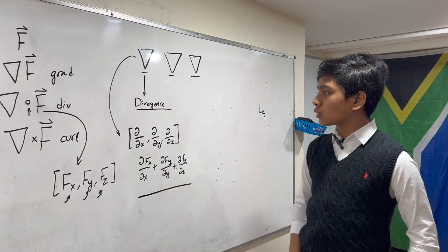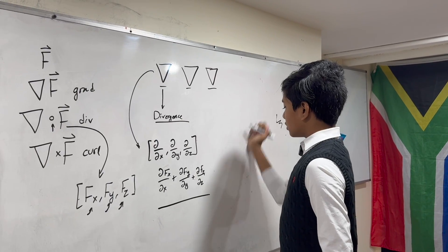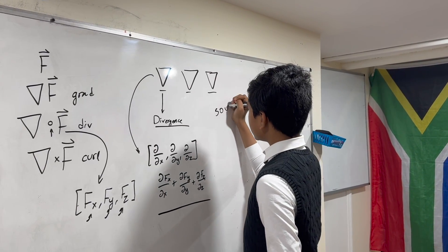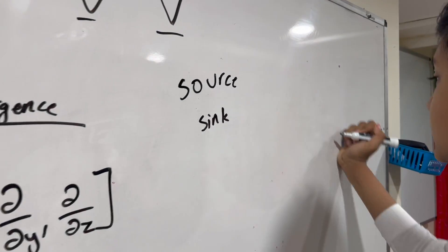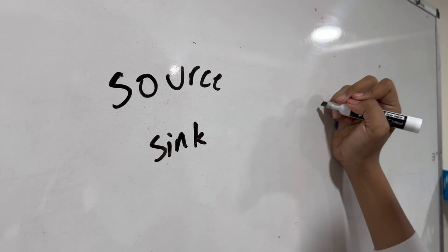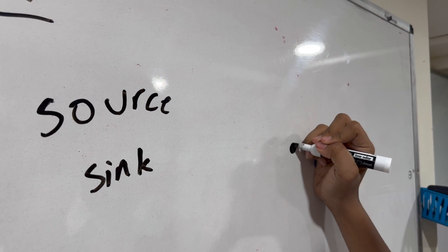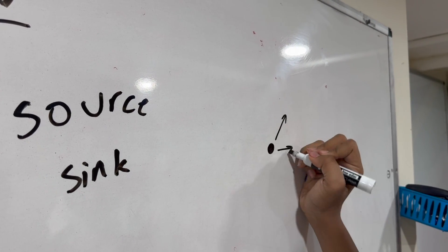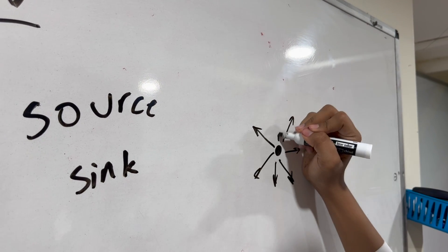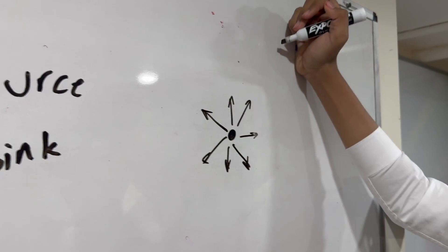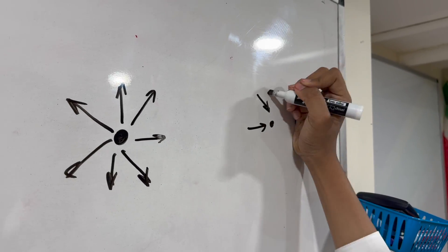So, why is this important? Well, basically, it can tell you what a source and what a sink is. So, essentially, let's say that you have a point in space from which fluid is coming out.